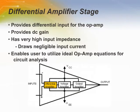Here is the block diagram of a simple and general purpose amplifier with the three stages. The first stage, or the differential input stage of the amplifier, must have very high input impedance. This causes the Op-Amp to draw very negligible amounts of input current, enabling the user to utilize ideal Op-Amp equations for circuit analysis purposes. This stage also provides the DC gain of the amplifier.